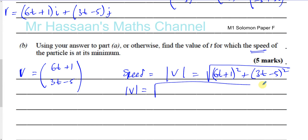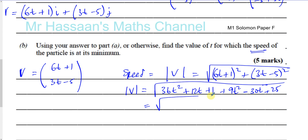Expanding: (6t + 1) squared gives 36t squared plus 12t plus 1, and (3t minus 5) squared gives 9t squared minus 30t plus 25. Simplifying, we get the square root of 45t squared minus 18t plus 26. So that expression under the square root is the square of the speed.